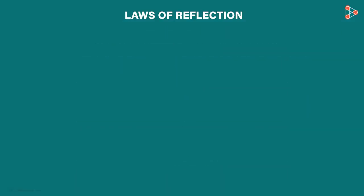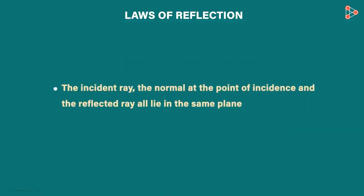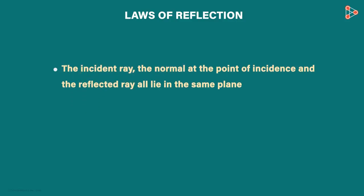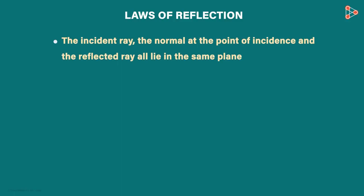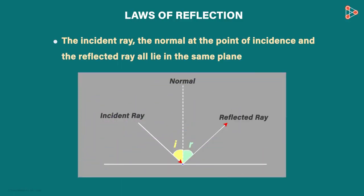What about the second statement? The second one tells us that the incident ray, reflected ray, and normal all lie in the same plane. So if I draw this scenario on a piece of paper, I will get this. Incident ray, reflected ray, and the normal all three are in the plane of the paper. The second law tells us that they will always be on the same plane.